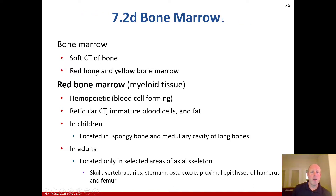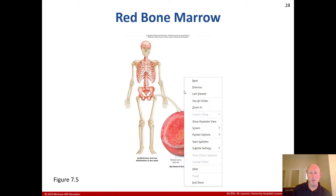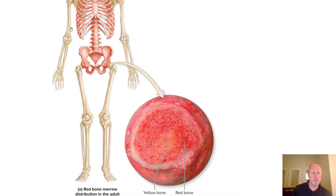Bone marrow is a soft connective tissue of the bone. Red bone marrow is myeloid tissue — hemopoietic, blood cell forming — consisting of reticular connective tissue, immature blood cells, and fat. In children, it's located in the spongy bone and medullary cavity of long bones. In adults, it's only located in selected areas of the axial skeleton: the skull, vertebrae, ribs, sternum, ossa coxae, and the proximal epiphyses of the humerus and femur. Yellow bone marrow is a product of red bone marrow degeneration as children mature into adults. It's a fatty substance, but can convert back to red bone marrow during severe anemia or conditions with reduced erythrocytes, to facilitate production of additional red blood cells. In adults, red bone marrow is concentrated in the skull, rib cage, vertebrae, and pelvis, whereas in children it is found throughout the body.